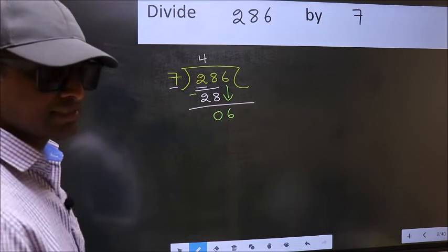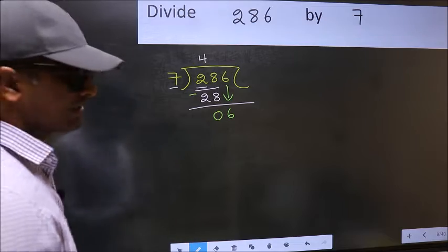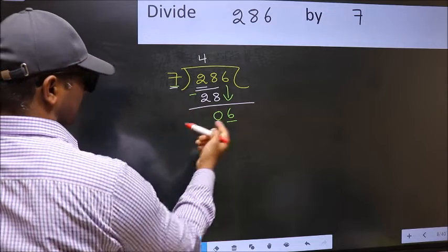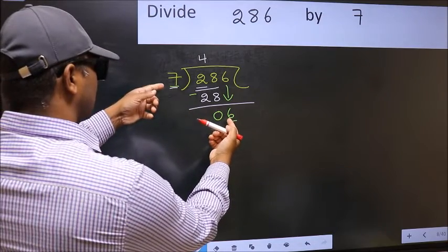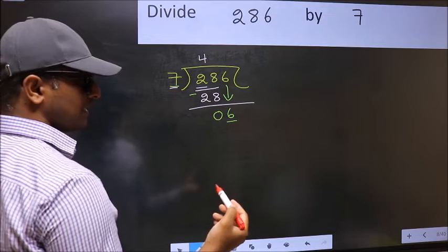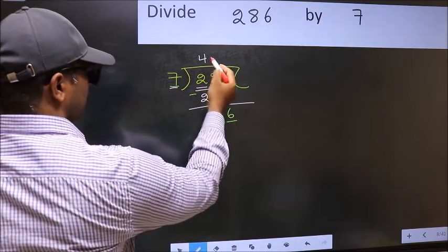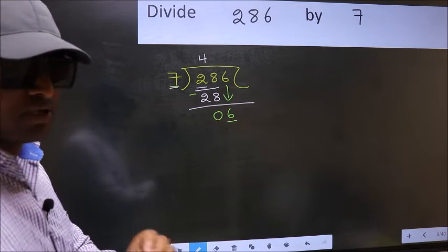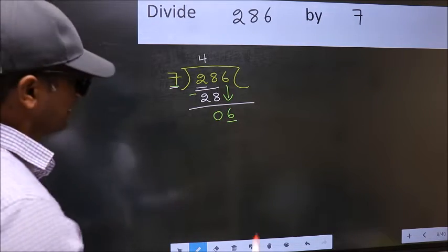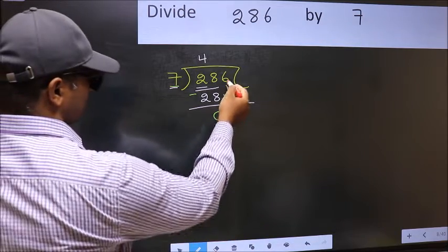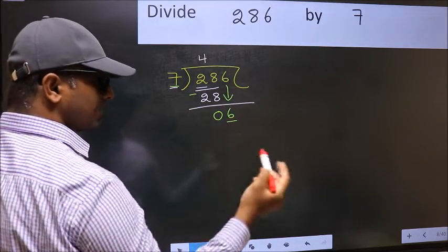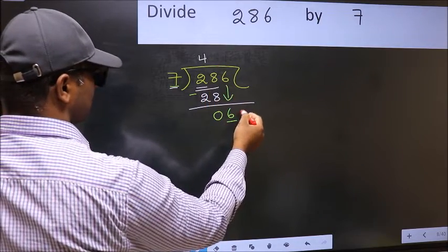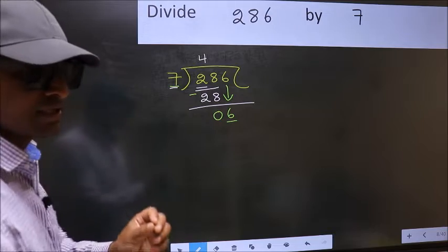And the mistake is this. Here we have 6 and here 7. 6 is smaller than 7. So what many do is, they directly put dot and take 0. Which is wrong. Why is it wrong? Because just now you brought this number down. And in the same step, you want to put dot and take 0. Which is wrong.